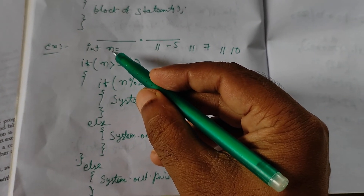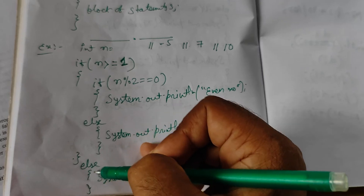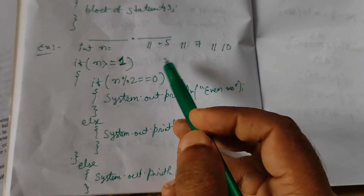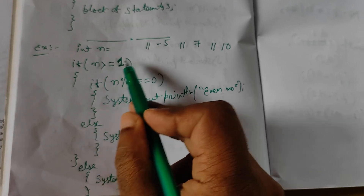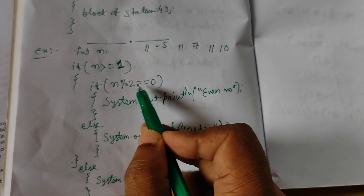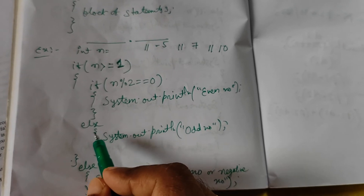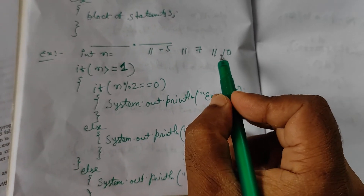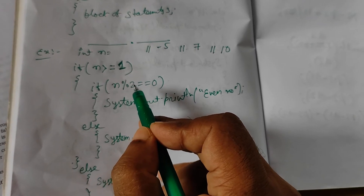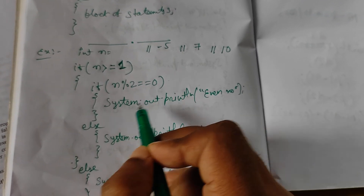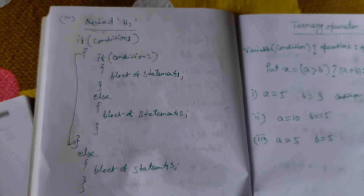If n = 7: n >= 1 is true, enter the body. Then 7 % 2 == 0? No, remainder is 1, so it goes to else — prints 'odd'. If n = 10: n >= 1 is true, enter the body. Then 10 % 2 == 0? Yes, so it prints 'even number'. That is nested ifs as part of our conditional construct if-else.